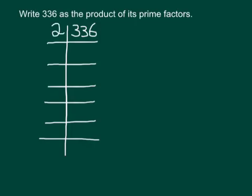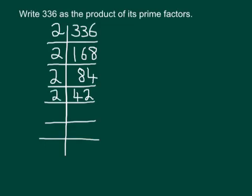If we divide 336 by 2 we get 168. Then we apply the same process with the new number and try to divide by the smallest possible prime. It's still an even number so it divides by 2: 168 divided by 2 is 84. Again, 84 divided by 2 is 42, and 42 divided by 2 is 21.